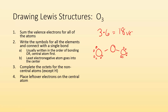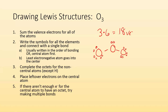Now place leftover electrons on the central atom. I've placed 16 so far, so there's 17 and 18. And if there aren't enough valence electrons for the central atom to have an octet, try making multiple bonds. Right now the central atom only has six valence electrons, so I have to make a multiple bond. For one of these oxygens I'm going to steal two of those valence electrons and make a double bond with it.